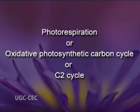The problem with rubisco is because of its oxygenase activity. The consequence of the oxygenase activity of rubisco is the process of photorespiration, also known as the oxidative photosynthetic carbon cycle or C2 cycle.